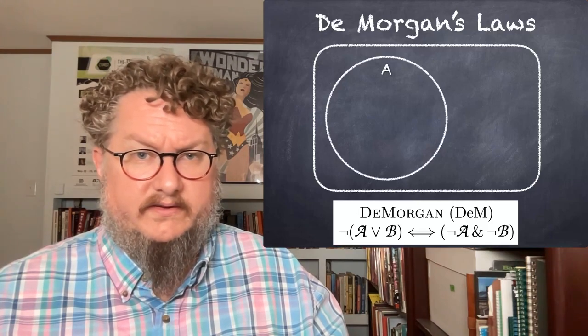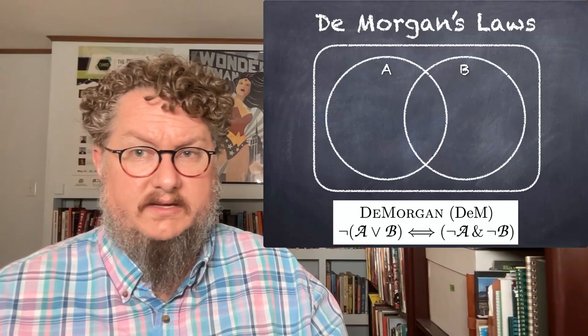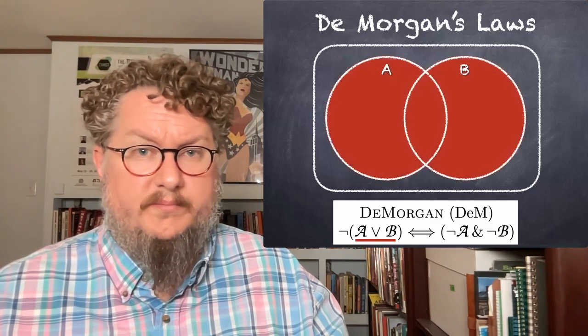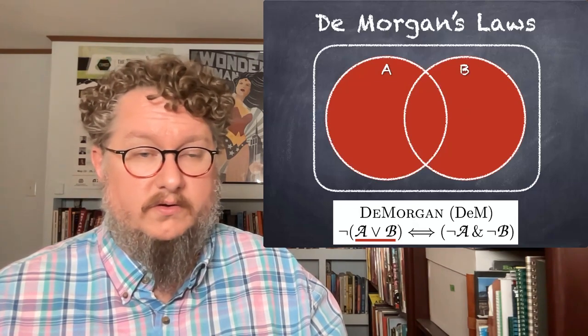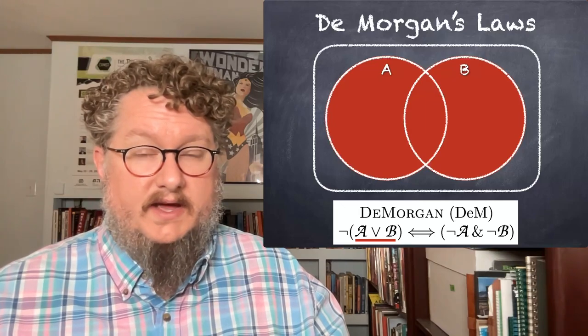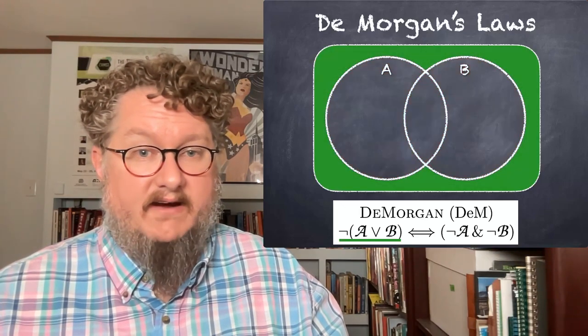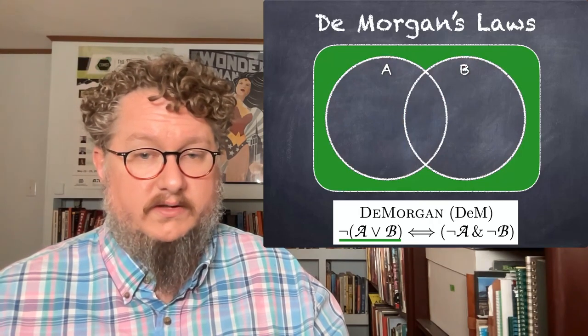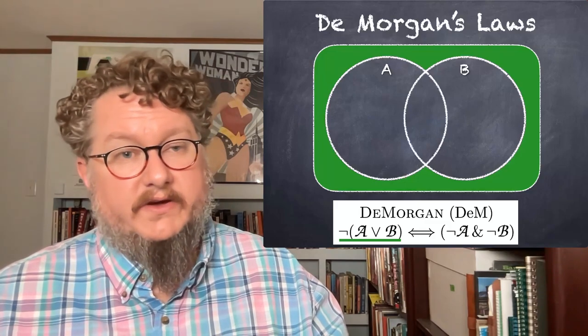So let's consider this circle A and consider this circle B. We know A or B is whatever is in either or both circles. That whole area in red is A or B. Not A or B is everything outside of that area. So the whole left-hand expression there is highlighted in green.